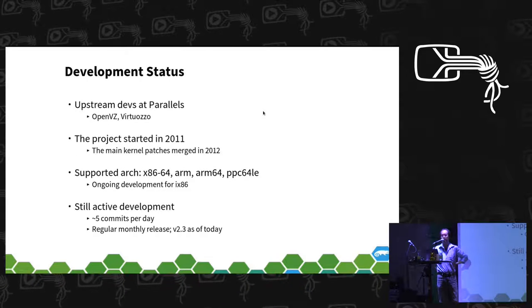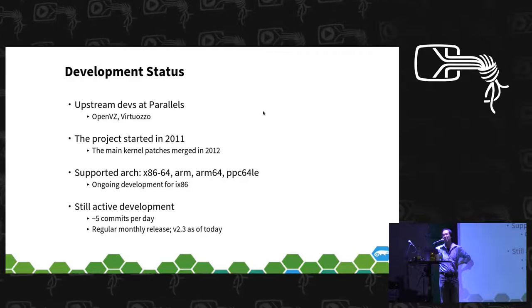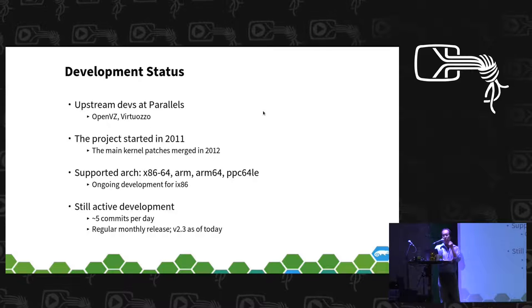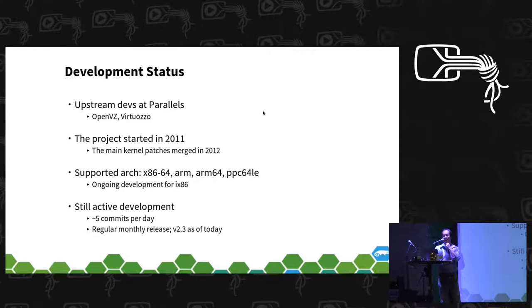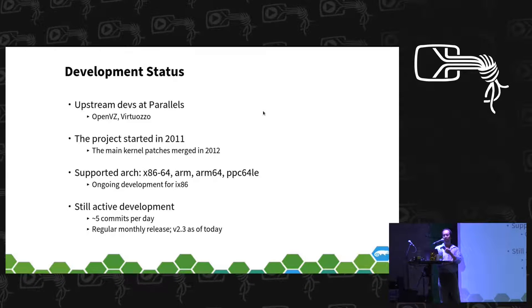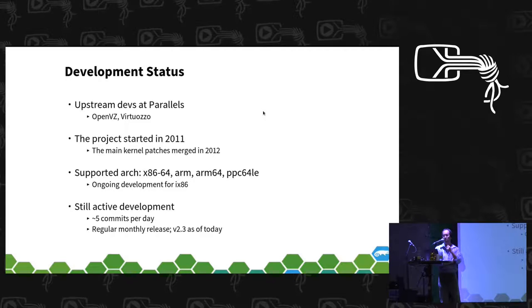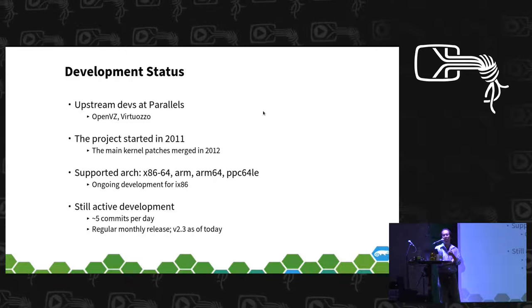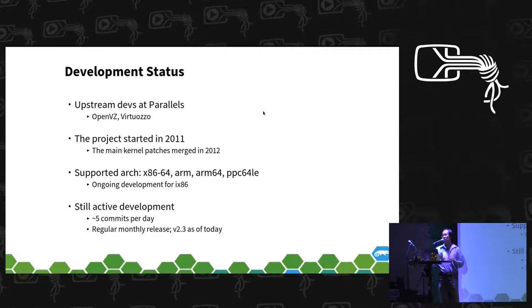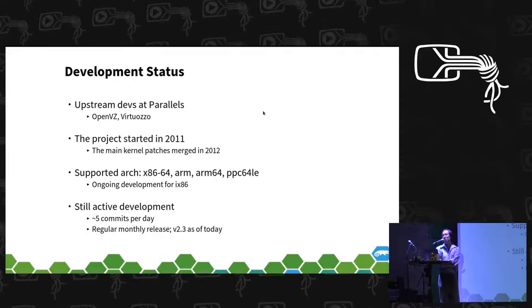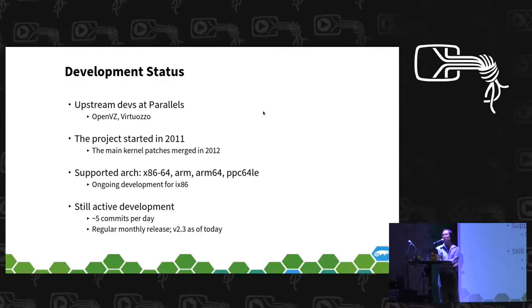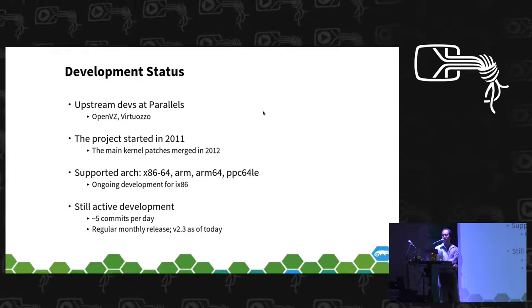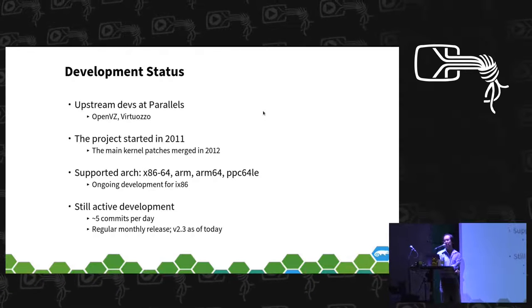The upstream developers are mostly working at Parallels, and also on OpenVZ and Virtuozzo, sharing long-standing container technologies. The CRIU project started back in 2011, and the patches were merged into the kernel soon after. Currently there are multiple supported architectures: x86-64, ARM64, and PPC64 Little Endian. 32-bit Intel support is ongoing but not yet complete. Note that these architecture requirements are only for the user space CRIU tools — the kernel side is generic and supports all architectures. The project is very active with multiple commits each day and a regular monthly release; the latest version as of today is version 2.3.